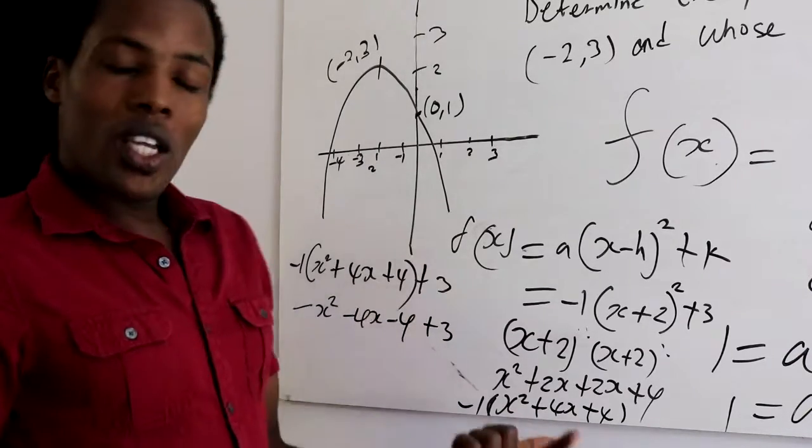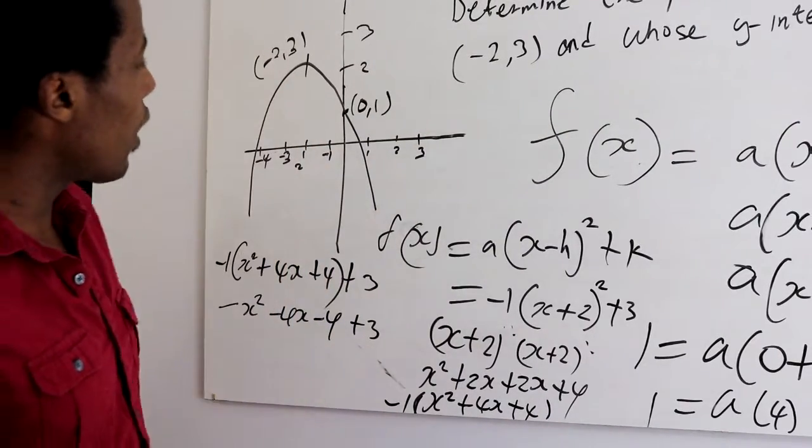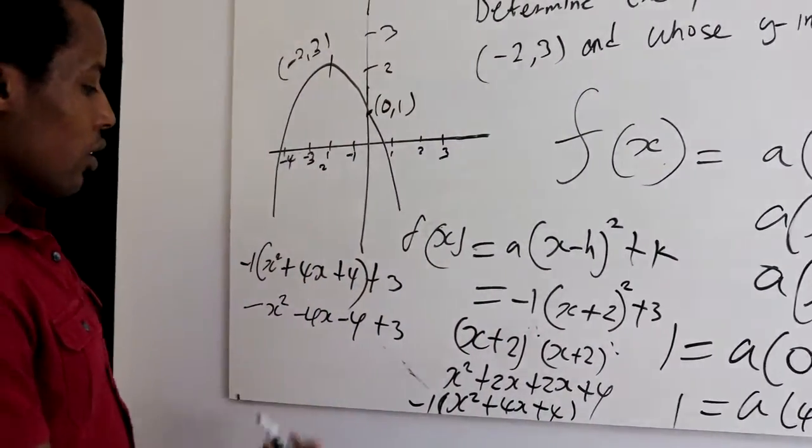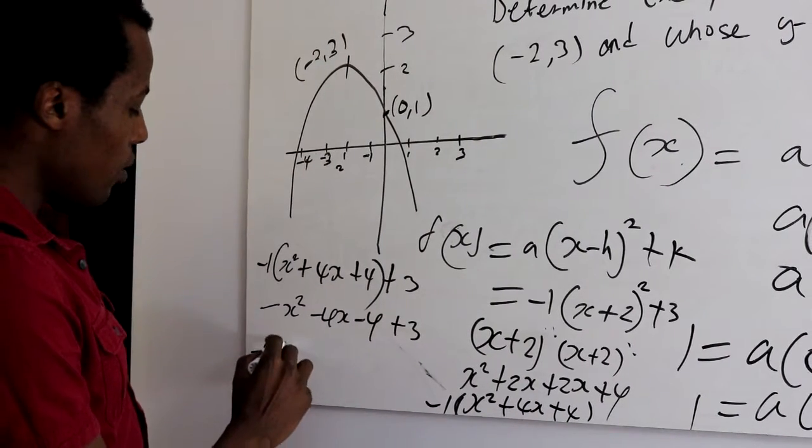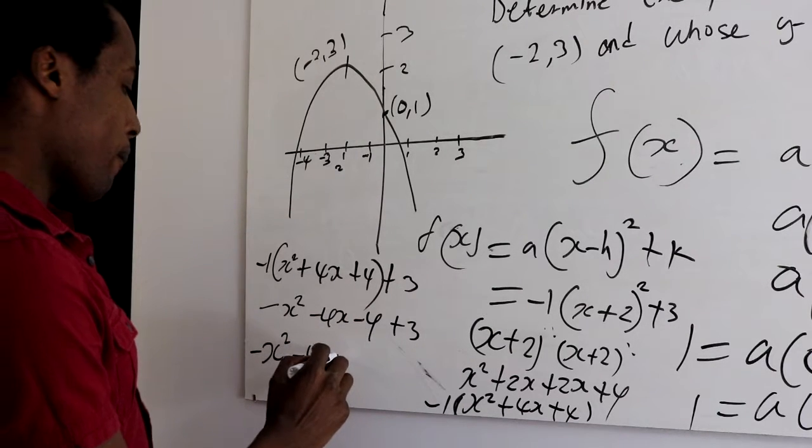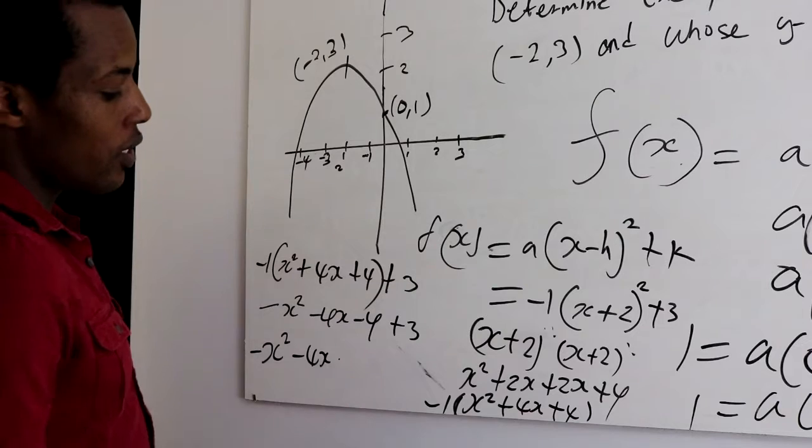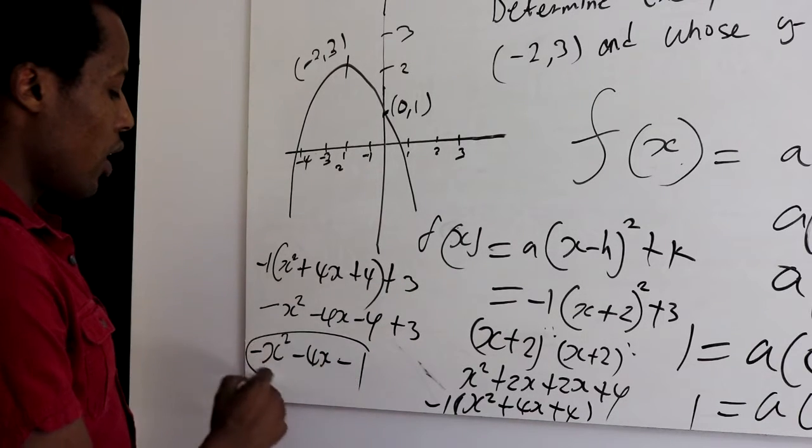So now we're about to get our quadratic equation for the graph that we've been given over here. So this is the final solution: minus x squared minus 4x, minus 4 plus 3 is minus 1. And this is our final answer.